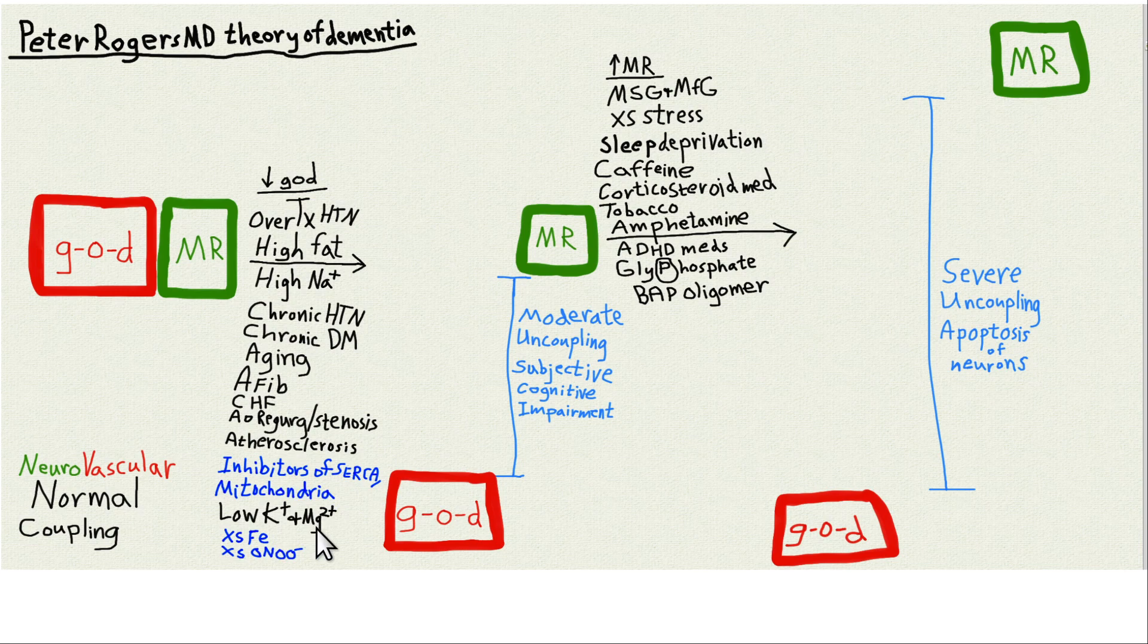Low potassium, low magnesium, which are both vasodilators. So when you're low on those things, you'll have less blood flow. Excessive iron, FE, can be an indicator of increased risk of oxidative stress. Excessive peroxynitrite also will contribute to oxidative stress.